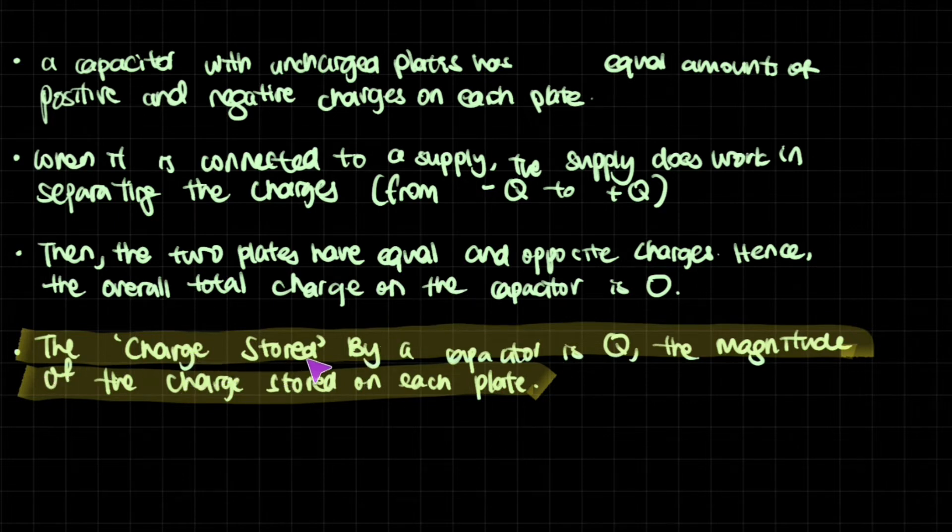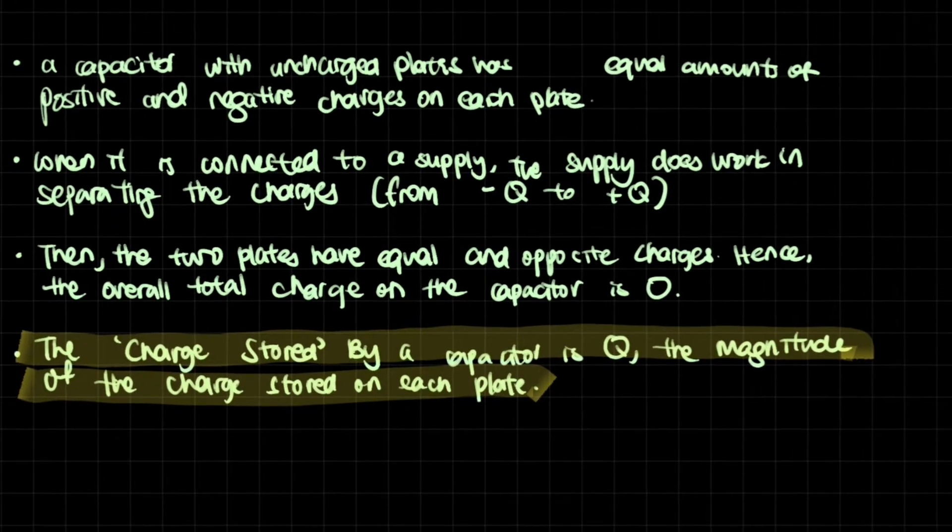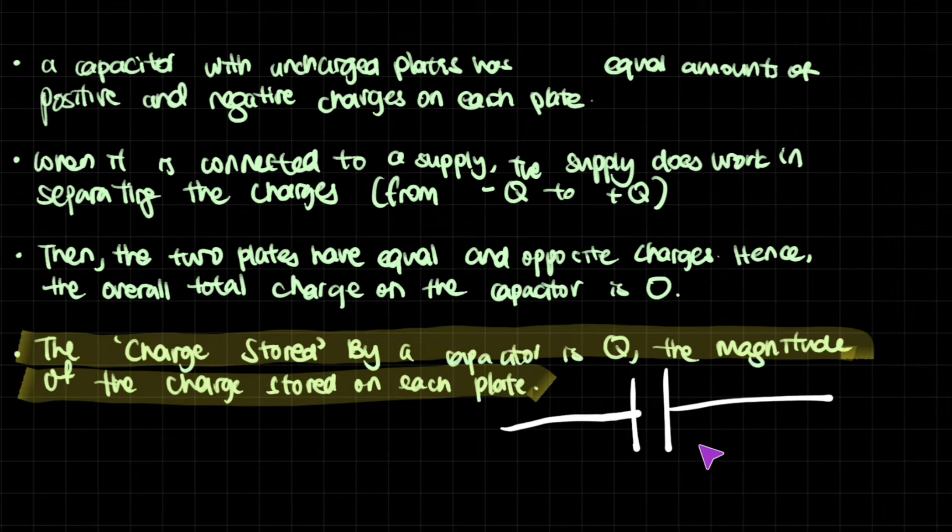So the charge stored by a capacitor is Q, the magnitude of the charge stored on each plate. What does that mean? Well, if we have a capacitor and one side has negative Q, that's the charge. One side has positive Q. When we want to talk about what is the charge stored, well, that would just use the magnitude.